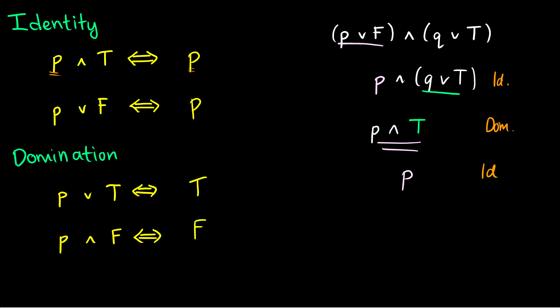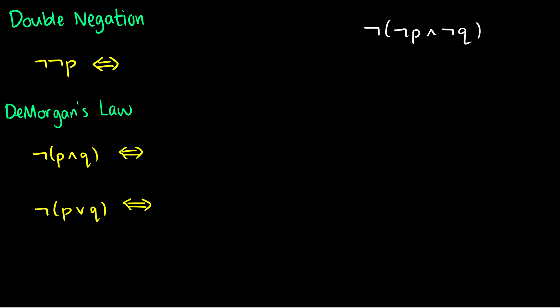The double negation law says that ¬¬P is the same as P. If P is true then ¬P is false, which means ¬¬P must be true. This is easy to see with a truth table: if you reverse the values twice, it's like not reversing at all.